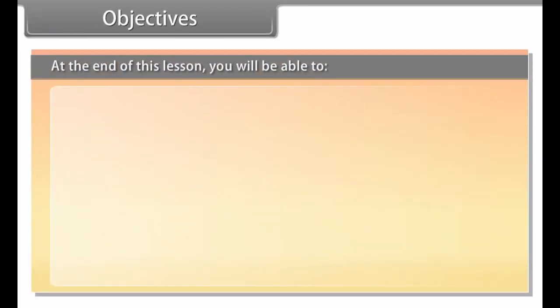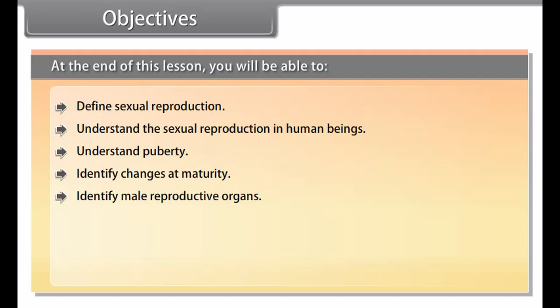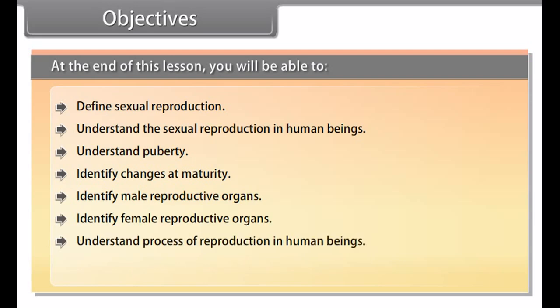Objectives: At the end of this lesson you'll be able to define sexual reproduction, understand sexual reproduction in human beings, understand puberty, identify changes at maturity, identify male reproductive organs, identify female reproductive organs, understand the process of reproduction in human beings, and understand menstruation.